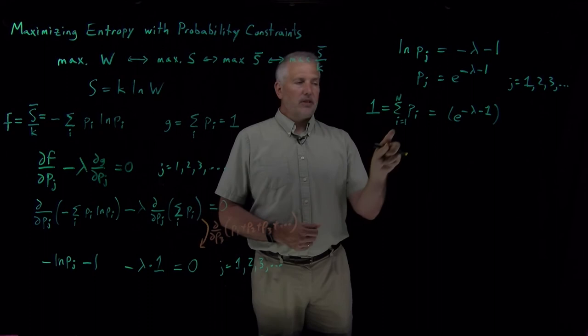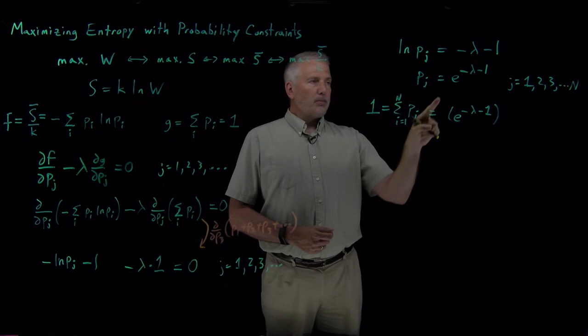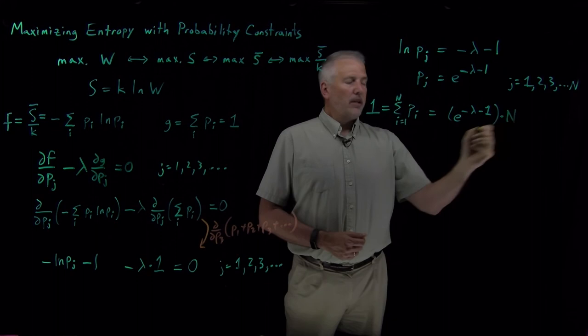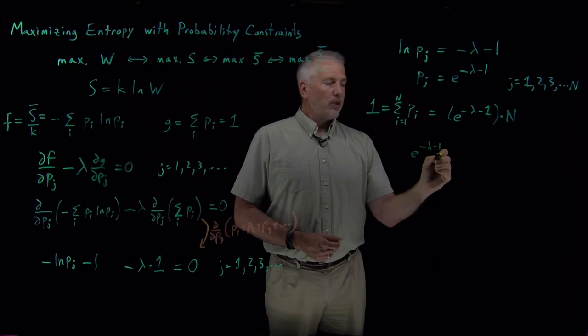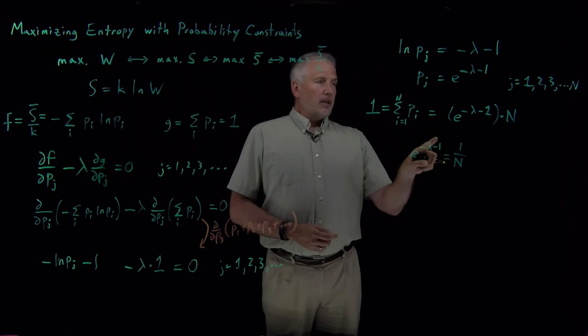Then N different times, I'm going to add up e to the minus lambda minus 1. So e to the minus lambda minus 1, N times, has to be equal to 1. And what that tells us is e to the minus lambda minus 1 is equal to 1 over N.